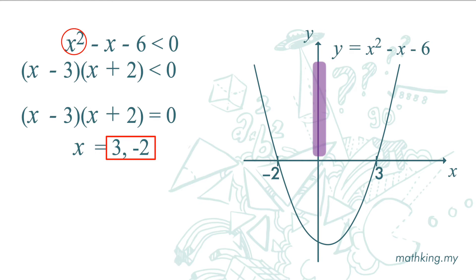Here is where x square minus x minus 6 greater than 0. Here is where x square minus x minus 6 less than 0. What we want is x square minus x minus 6 less than 0. So the x value where x square minus x minus 6 is less than 0 is here. So the answer is x is greater than negative 2 but less than 3.